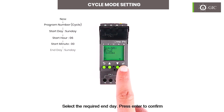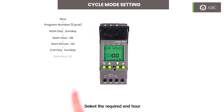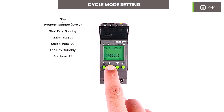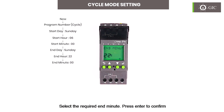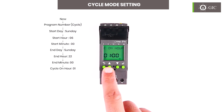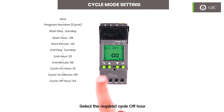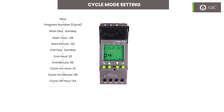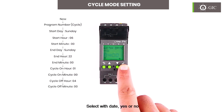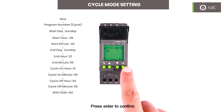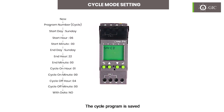Select the required end day and press enter to confirm. Select the required end hour and press enter to confirm. Select the required end minute and press enter to confirm. Select the required cycle on hour, cycle off hour, and press enter to confirm the minute. Select 'With Date' — yes or no — and press enter to confirm. The cycle program is saved. In this example, the output will be on for one hour and off for four hours in a cyclic manner.